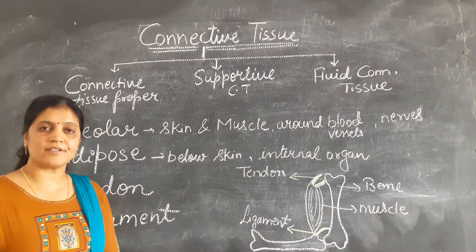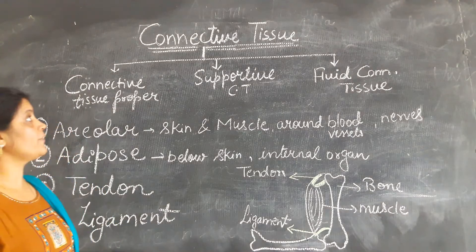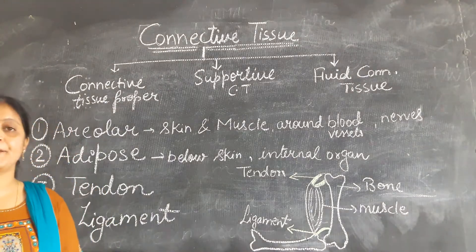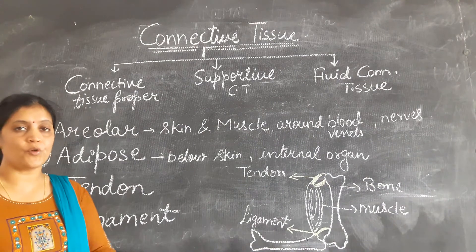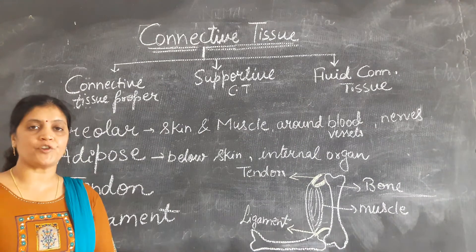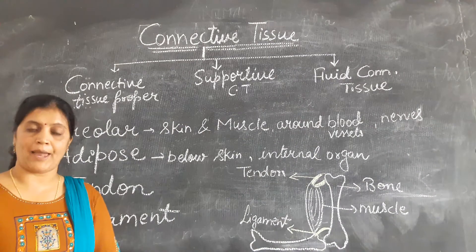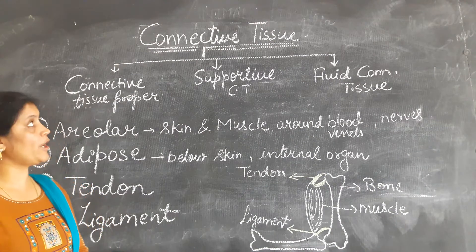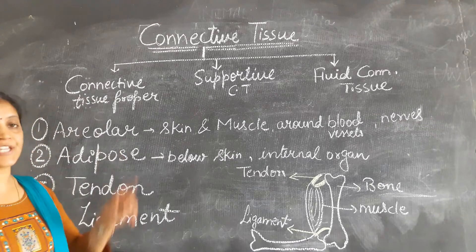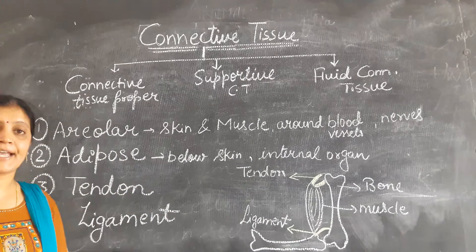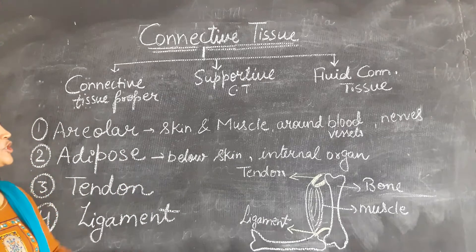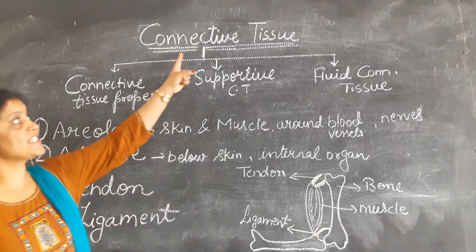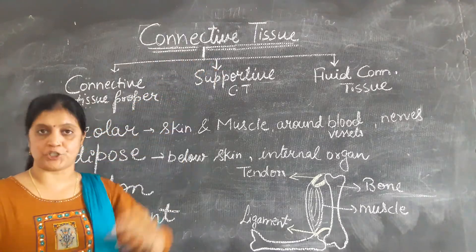Good morning students. Earlier we have discussed animal tissue. The first type of tissue is animal epithelial tissue. Today we are going to start the second animal tissue, which is connective tissue.